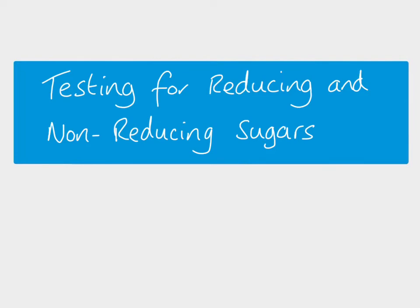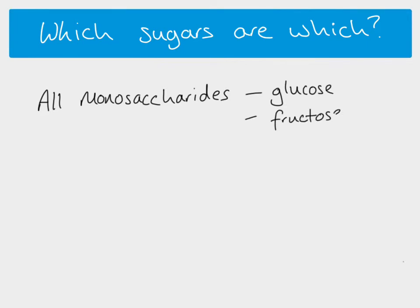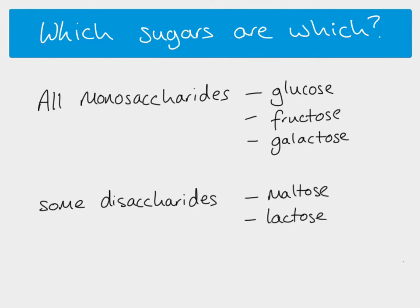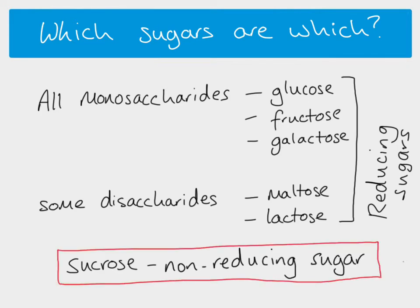In this video we are looking at the tests for reducing and non-reducing sugars. First, let's make sure we understand which sugars are which. All monosaccharides are reducing sugars — glucose, fructose, and galactose are all reducing sugars. Some disaccharides are also reducing sugars: maltose and lactose are both reducing sugars. The important non-reducing sugar you need to know is sucrose — that's the only non-reducing sugar you need to worry about.